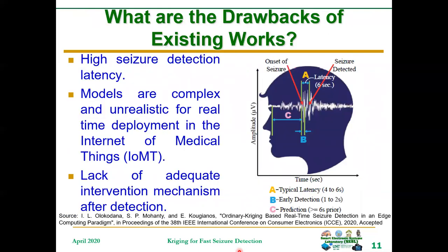The drawbacks of existing works include high seizure detection latency, complexity of the models — which makes them unfit for deployment in the Internet of Medical Things — and lack of adequate intervention mechanisms after detection. Seizure detection is useless if nothing is done afterwards to rescue the seizure patient from death.